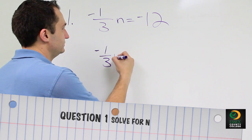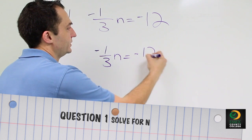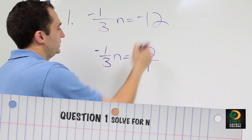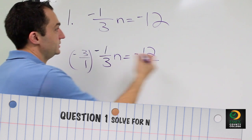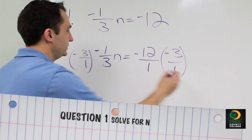So I'm going to rewrite the problem for you. We multiply both sides by negative 3 over 1 and negative 3 over 1.